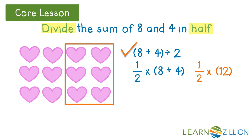Let's check it. 1 half times 12 is 12 halves. You simplify that and you get 6. The same value. These are called equivalent expressions.